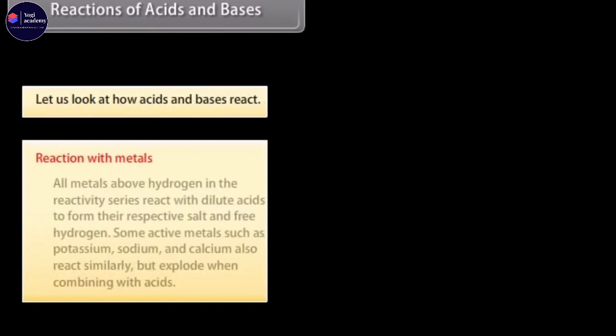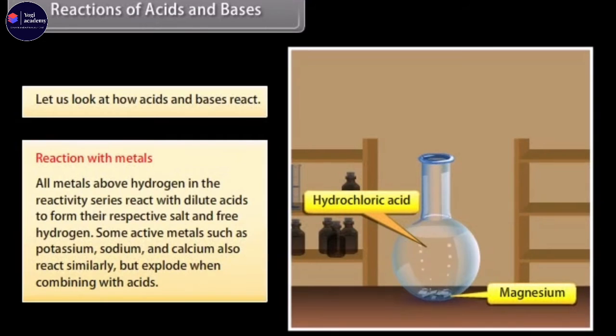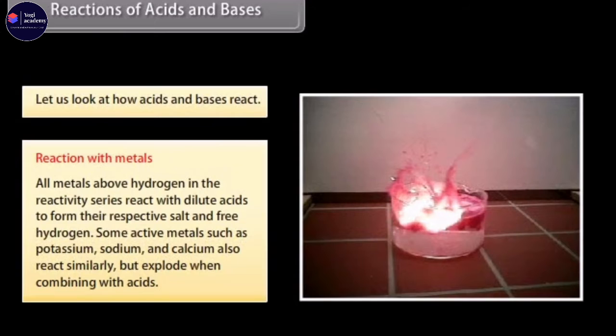Let us look at the different reactions of acids and bases with metals. All metals above hydrogen in the reactivity series react with dilute acids to form their respective salt and free hydrogen. Active metals such as potassium, sodium and calcium also react similarly but explode when combining with acids.